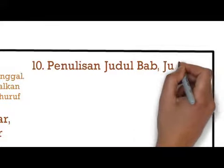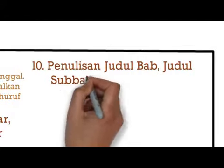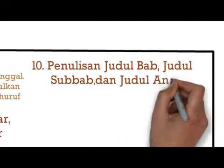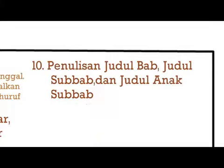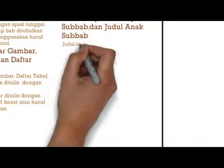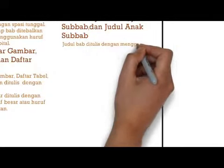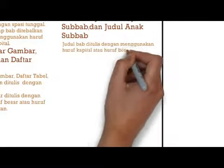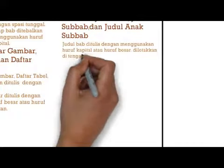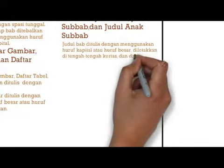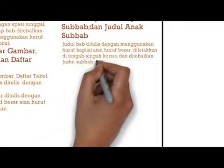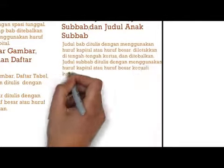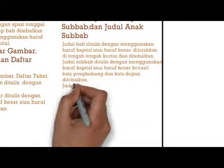Yang kesepuluh, penulisan judul bab, judul subbab, dan judul anak subbab. Judul bab ditulis menggunakan huruf kapital, diletakkan di tengah, dan ditebalkan. Jarak penulisan bab disesuaikan dengan formasi ukuran margin. Judul subbab ditulis menggunakan huruf kapital kecuali kata hubung dan kata depan, ditebalkan, dimulai dari tepi kiri, dan tanpa tanda titik.